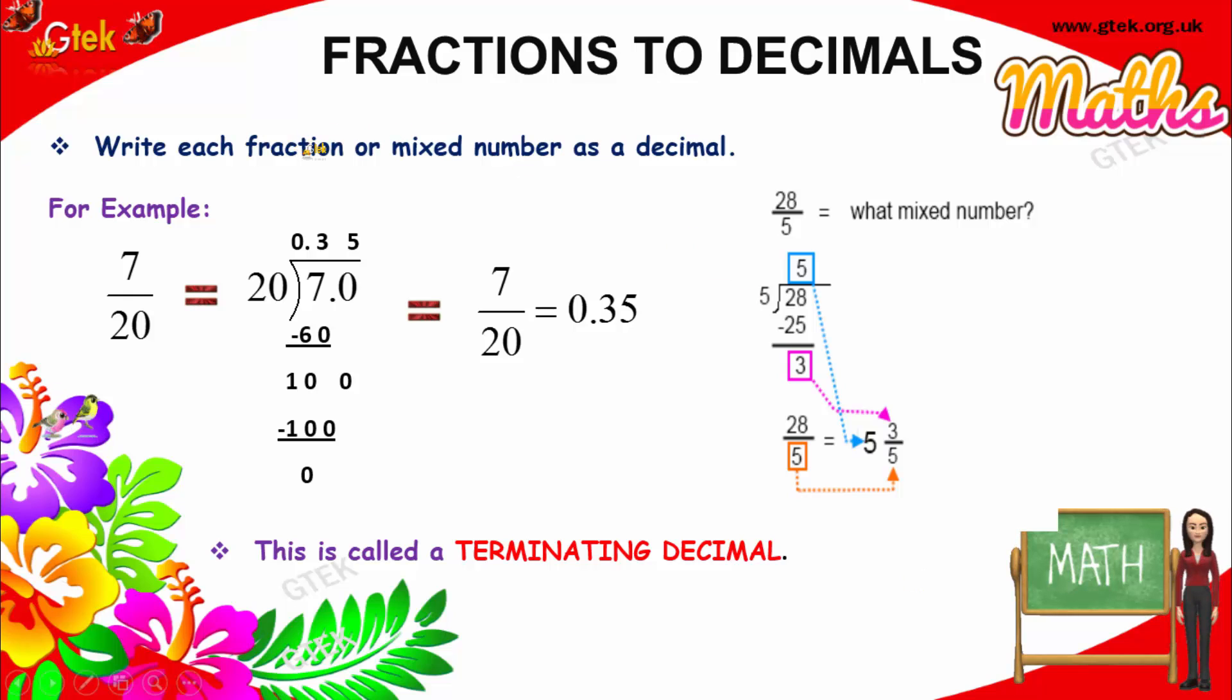Now write a fraction or mixed number as a decimal. For example, 7 divided by 20. 7 is less than 20, so obviously you need to add 0 here.